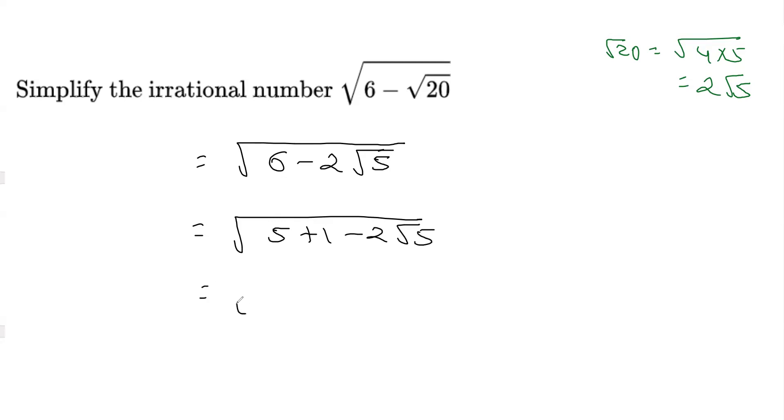In the next step, I'm going to write 5 as root 5 whole square, 1 as 1 square, minus 2 times root 5, and I can multiply an additional 1 here.